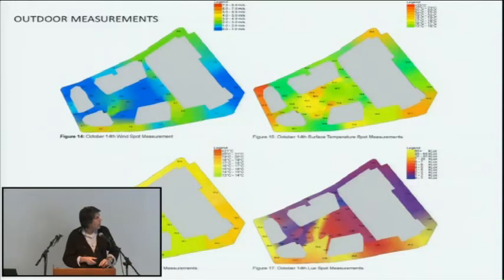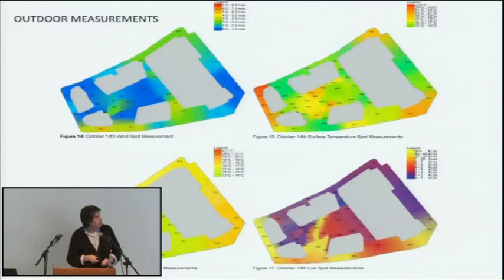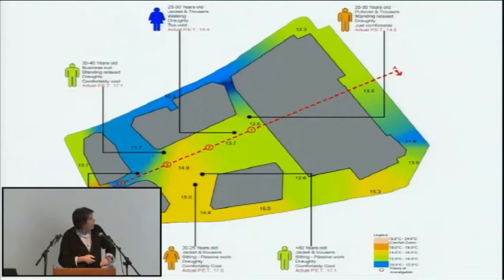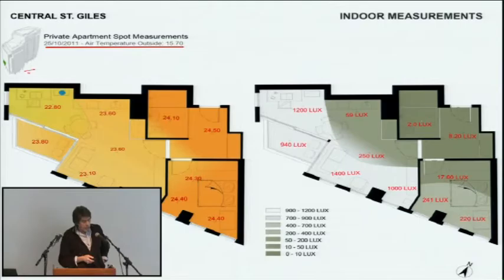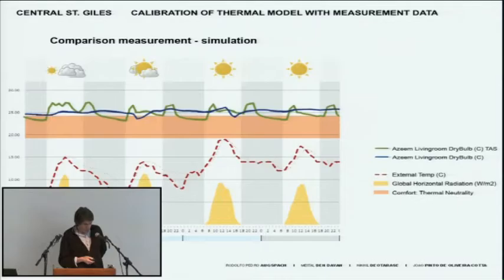This year we extended into looking at outdoor spaces. Here you see measurements taken in late October, involving different variables: temperatures, surface temperatures, lux readings, wind velocities, and the interpretation of those measurements and of the experience of people around the site in terms of comfort. And inside the building, looking at individual units — dwellings — taking measurements of both temperatures and lux levels, which can then allow us to calibrate the computer model.